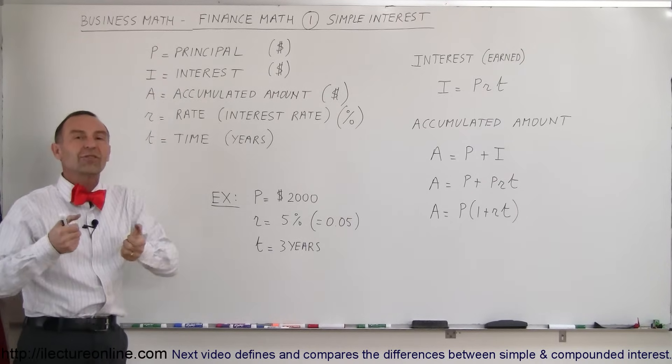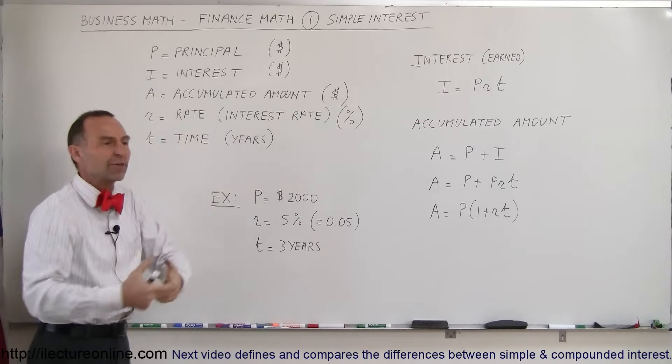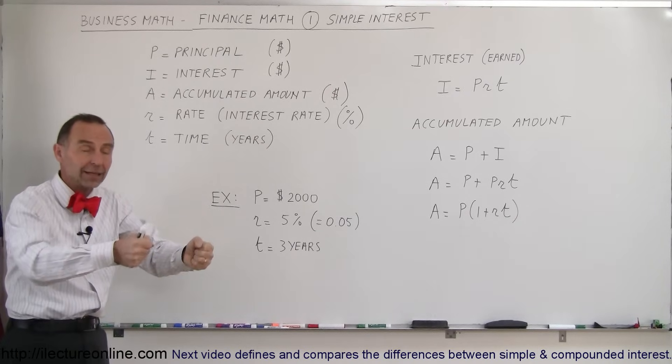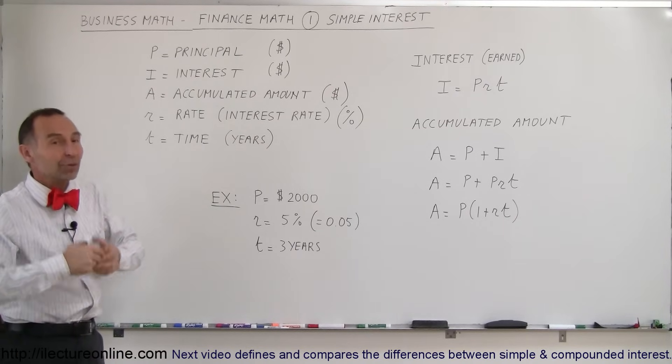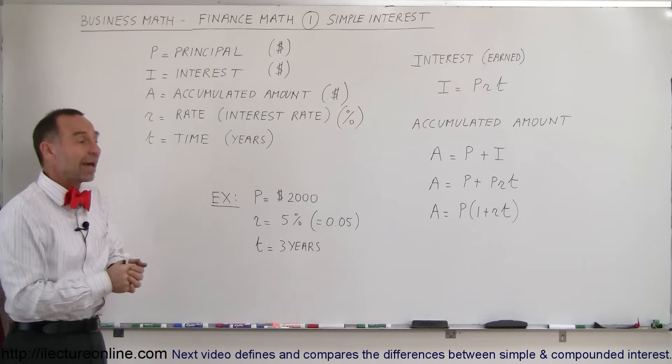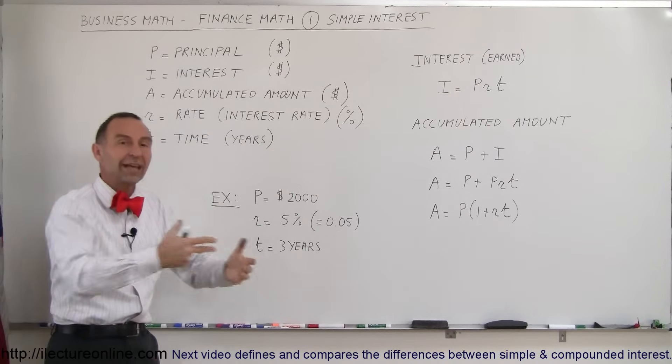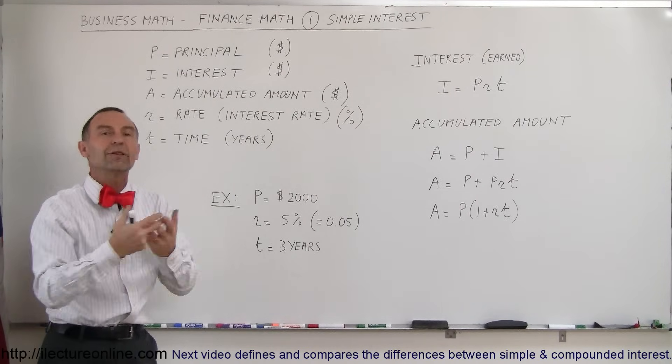P stands for principal. Principal is the initial amount of money that you will invest. So if you have a thousand dollars you want to put in the bank, you don't earn a lot of money these days, but there was a time where we earned a fair amount of money in the bank. You want to put in the bank to earn some interest. That's your principal. That's your principal investment.